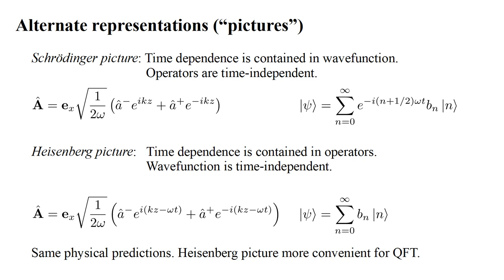These different representations lead to the same physical predictions. For quantum field theory, the Heisenberg picture is more convenient. So going forward, we will generally use this representation.